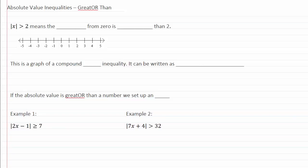Absolute value inequalities greater than. This is a play on words, it's a way to help you remember what direction things go a little bit. If we have the absolute value is greater than two, it means that the distance from zero is more than two. Remember absolute value has to do with the distance.